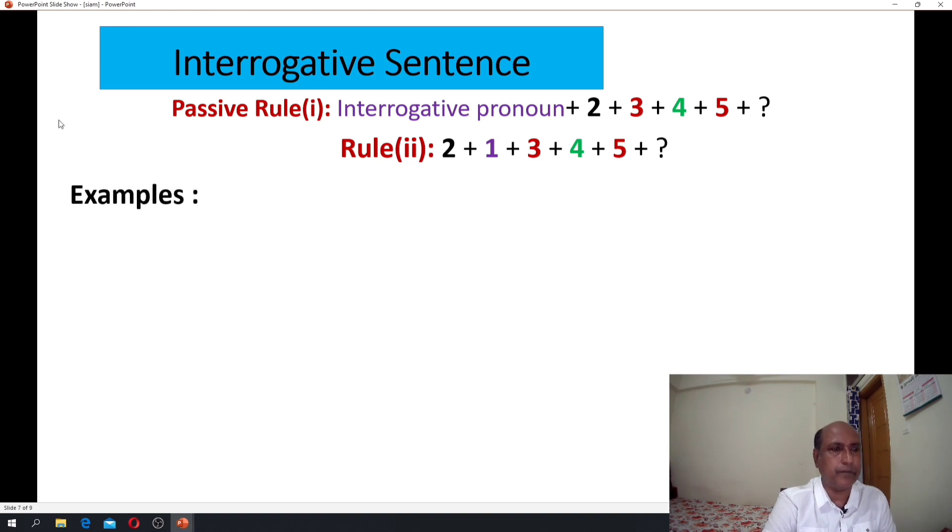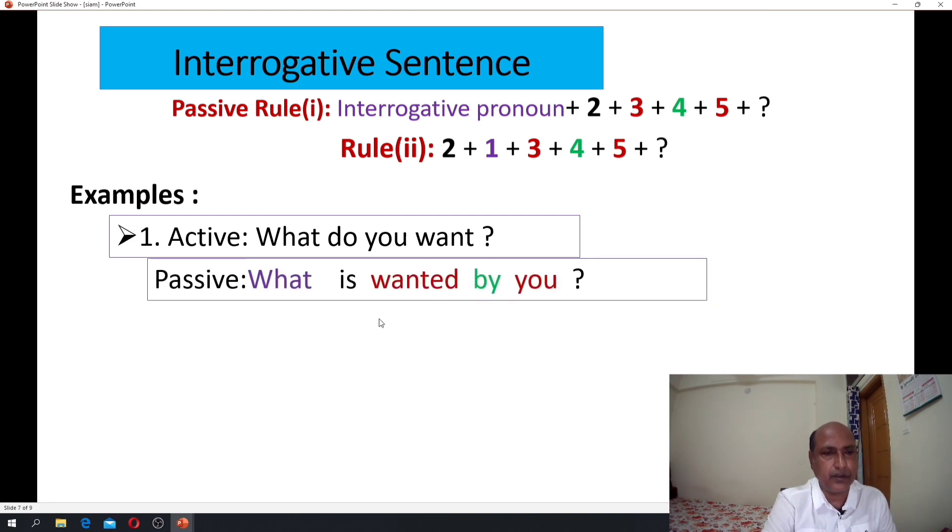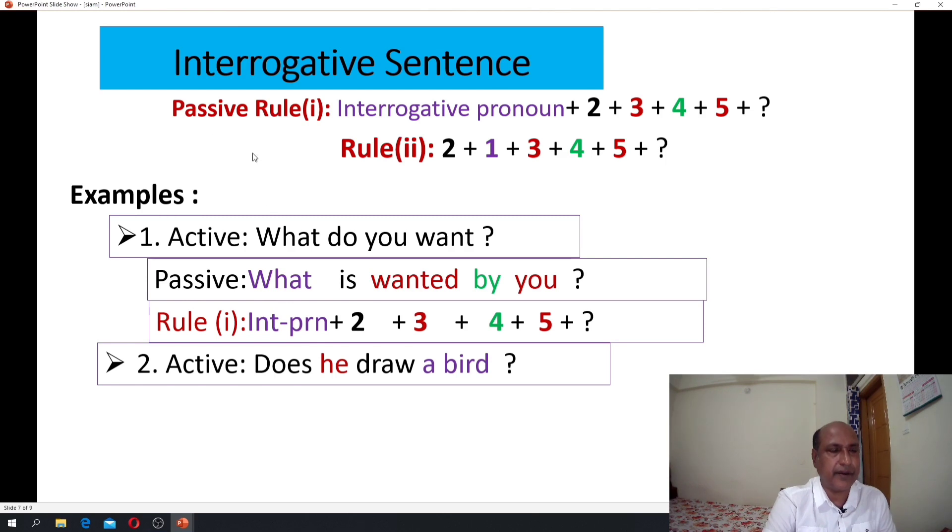Let's see an example. Active voice: what do you want? Passive: what is wanted by you? Rule: interrogative pronoun, two be verb, three main verb past participle, four peer position, five subject-object. The interrogative sentence starts with an auxiliary verb.